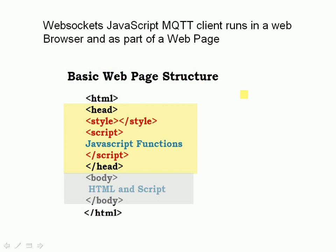It starts off with an opening HTML tag and finishes with a closing HTML tag. We have the header section which is going to contain most of our JavaScript — the script functions enclosed in the script tags. You can see some style tags which I'm not using in this video but will use later. The body contains HTML and a little script with a call to a function which runs the script.